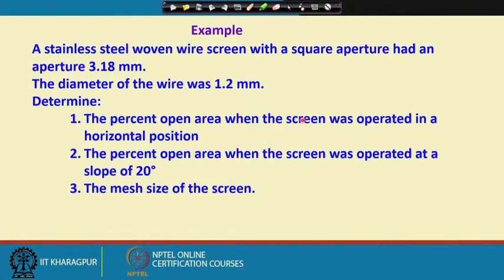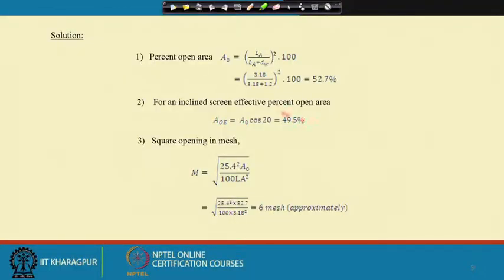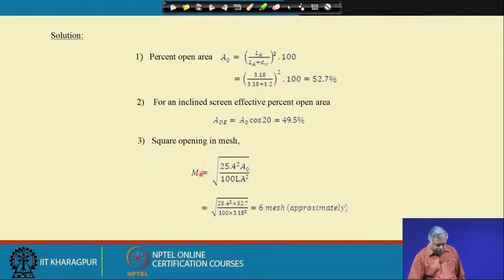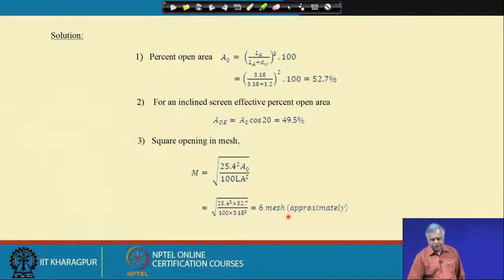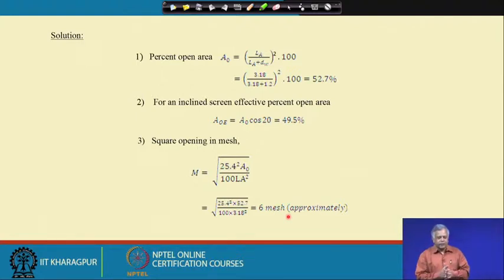For the mesh size of this screen, using M = √(25.4² × A_0 / (100 × L_A²)) with A_0 = 52.7 and L_A = 3.18, we get approximately 6 mesh. This shows how to convert from opening dimensions to mesh size, or vice versa - if you have the mesh number you can calculate the equivalent size in millimeters or microns.